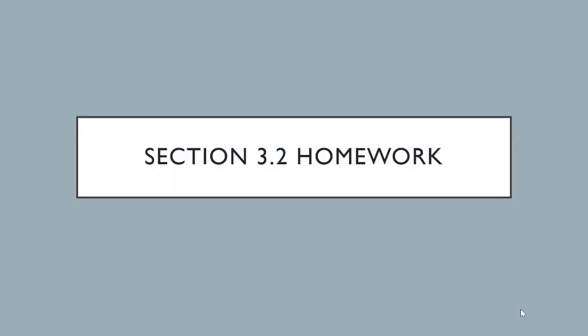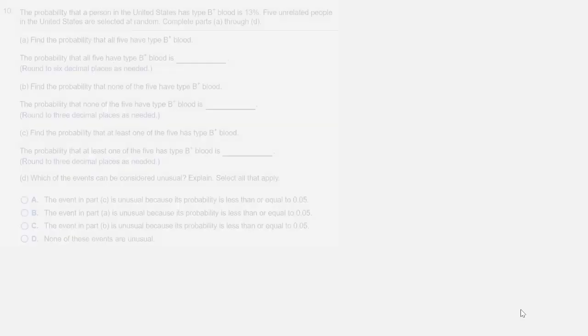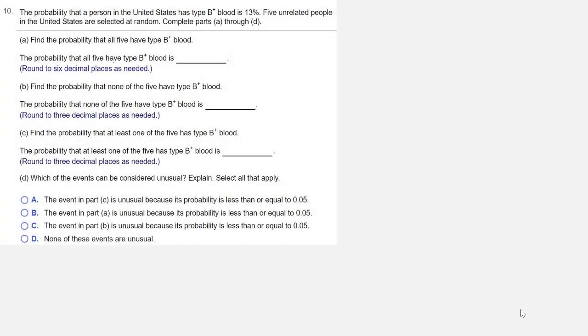Okay, so we're looking at questions on the homework from section 3.2. This is question number 10. The probability that a person in the United States has type B positive blood is 13%. Five unrelated people in the United States are selected at random. Complete parts A through D.